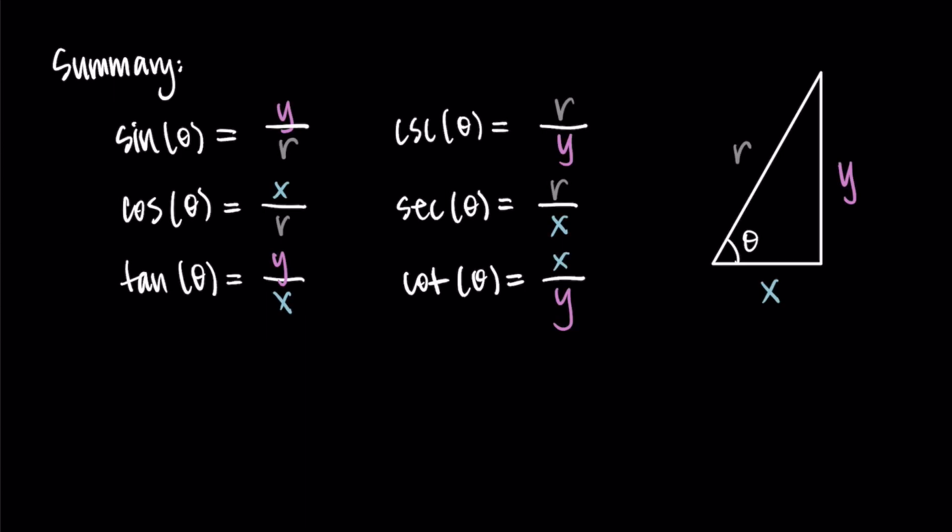I typically like to write them in this way that I have on the screen, where I have sine, cosine, and tangent in one column, and in the second column next to that, I have cosecant, secant, and cotangent. We can see that the fractions are all just swapped. We take the reciprocal, which means to switch the numerator and the denominator.